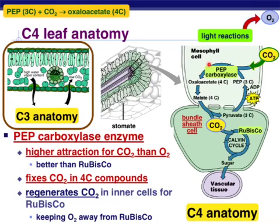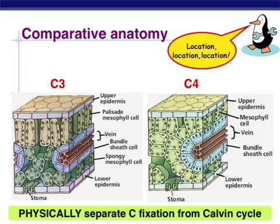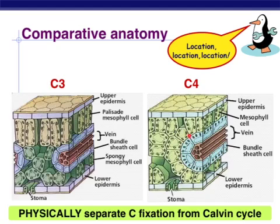Let's look at the anatomy again — it's all about location, location, location. Here is our C3 anatomy: lots of spongy layer, no bundle sheath cells. This is our C4 plant: not as much spongy layer, big bundle sheath cells. This whole region here is your bundle sheath cell — that entire thing. C3 plants do have bundle sheets; they're just not as large.